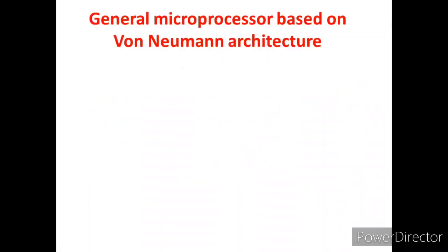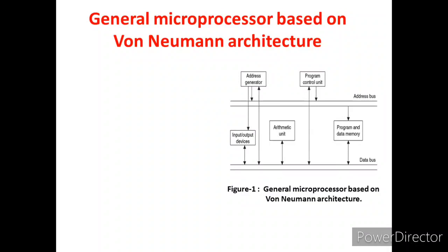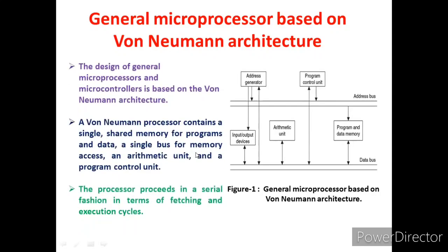There are two types of architectures in this processor. The first is the general microprocessor based on Von Neumann architecture, and the second is Harvard architecture. In the Von Neumann architecture, as seen in Figure 1, you can observe the address generator, program control unit, I/O device, arithmetic unit, and program and data memory all sharing the same bus. A Von Neumann processor contains a single shared memory for both program and data, and a single bus for memory access.